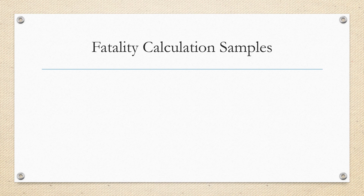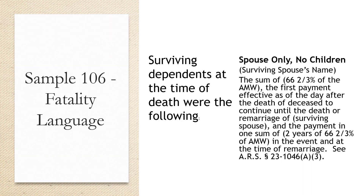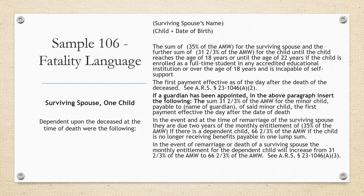Fatality Calculation Sample — Spouse Only with No Children: Indicate the name of the surviving spouse, the sum of 66 and two-thirds of the average monthly wage. The first payment is effective as of the day after the death of the deceased, to continue until the death or remarriage of the surviving spouse, and the payment in one lump sum of two years of 66 and two-thirds of the average monthly wage in the event and at the time of remarriage.